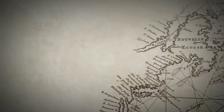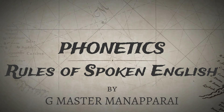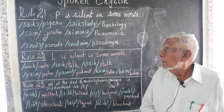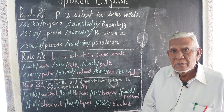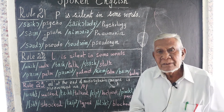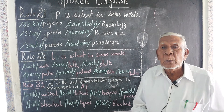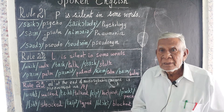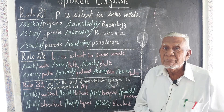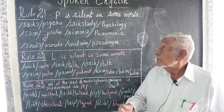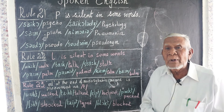Welcome to G Masters Rules of Spoken English. Rule number 21: P is silent in some words. We write P but we don't pronounce it. For example, psycho — P-S-Y-C-H-O — 'psycho.' He is a psycho. Similarly, psychology is an important science to study about the mind of a man.